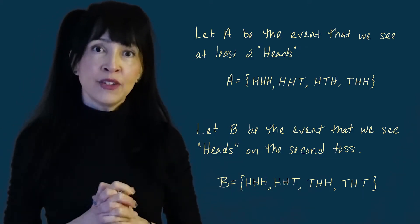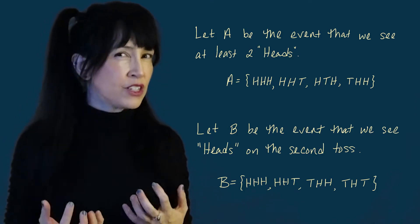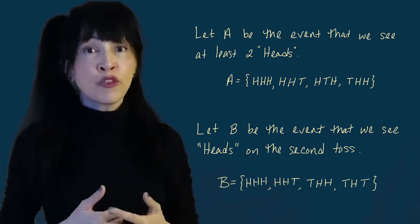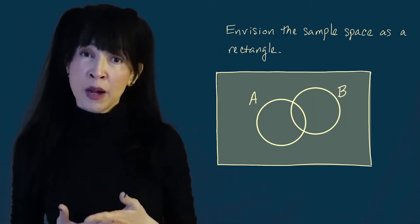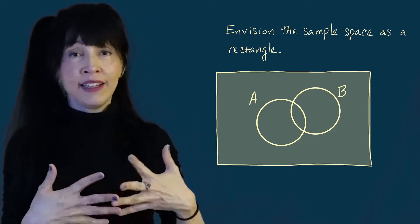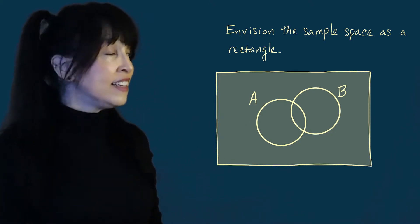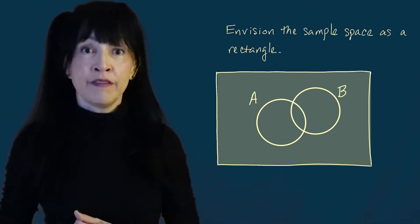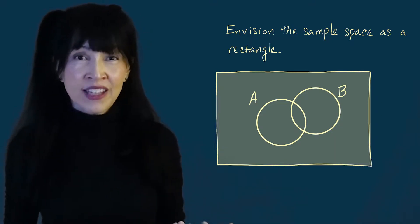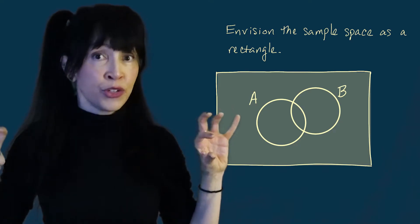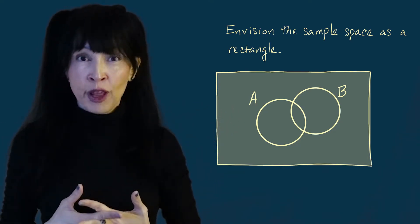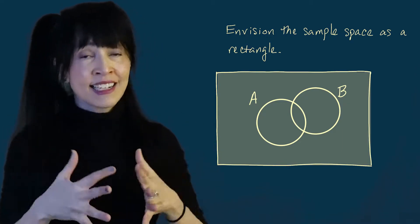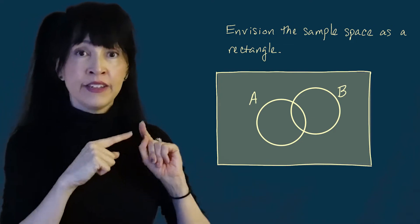A Venn diagram is going to help us understand how we can put these sets together in different ways. When you draw a Venn diagram to represent events for probability, you draw a rectangle and then a couple of circles, labeling them A and B. This is a generic Venn diagram. If A and B are completely separate and disjoint, the circles wouldn't overlap. Or if B is completely contained within A, that's another special picture. But this generic configuration covers the general case.